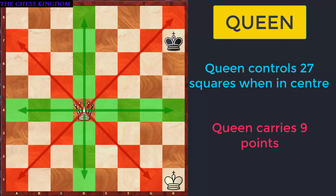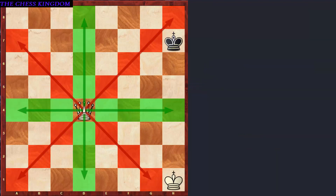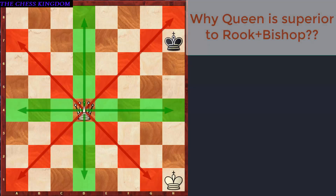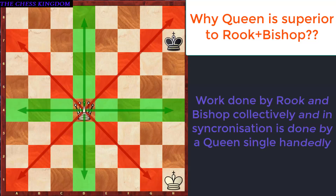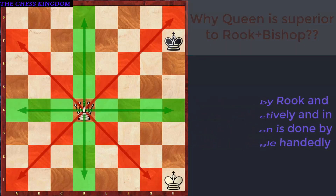As already mentioned, the Queen is a combination of a Rook and a Bishop, wherein the Rook is assigned 5 points and the Bishop 3 points. Ideally, the Queen should carry 5 plus 3, that is 8 points, instead of 9 points. But it is not so. The reason being, the work done by the Rook and the Bishop in combination and in synchronization is done by the Queen single-handedly, and therefore it carries 1 point more than the Rook and the Bishop in combination.